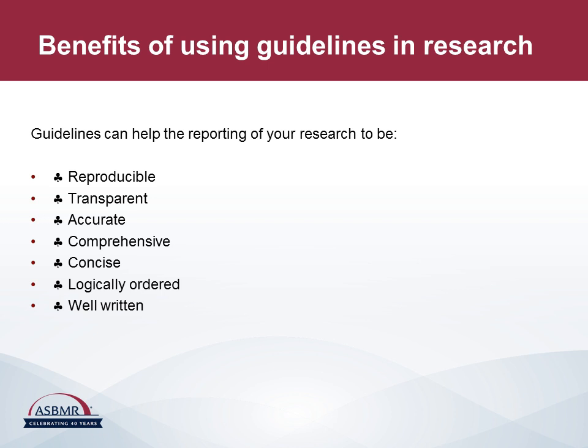The use of guidelines in research has many benefits. They are an important aid to reproducibility, and if all aspects of a study are clearly described, then it should be possible for the findings to be reproduced by other groups. The checklists also provide transparency about how the work was done and enable the reader to check the accuracy of the results. Finally, guidelines ensure that sufficient detail is provided in a paper and also help the writer to make it concise, logically ordered and well written.